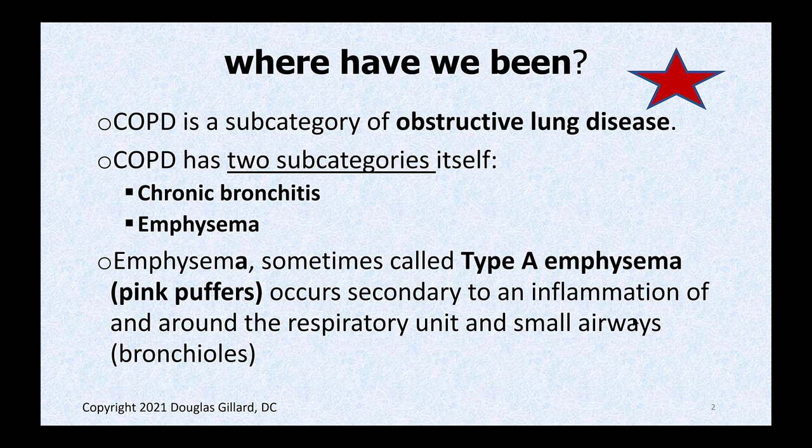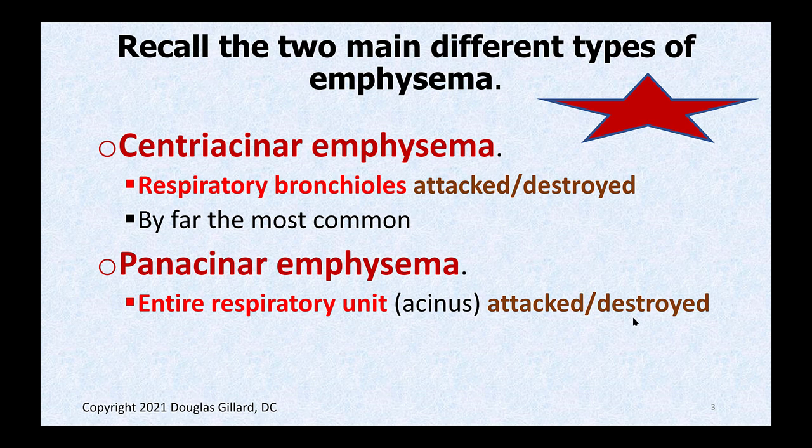Emphysema occurs secondary to inflammation mainly around the respiratory unit itself. There are actually two types of emphysema. There's centra acinar emphysema — if you have to have one, it's not quite as fatal as the other. It affects more the respiratory bronchioles, which are members of the respiratory unit or acinus — that unit where gas exchange occurs. In central acinar emphysema, the inflammation is isolated to the biggest part of the respiratory unit, the respiratory bronchiole. This is by far the most common.